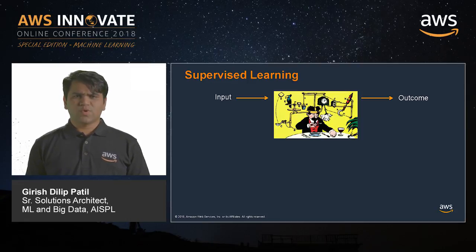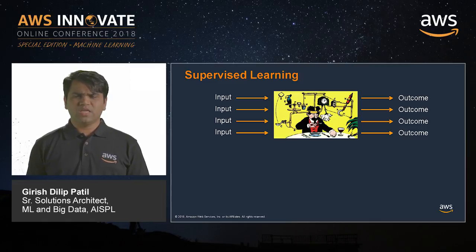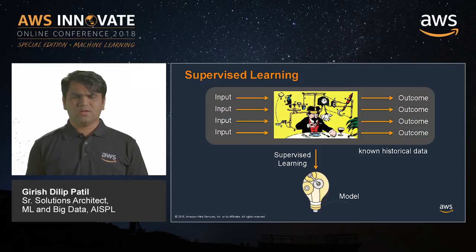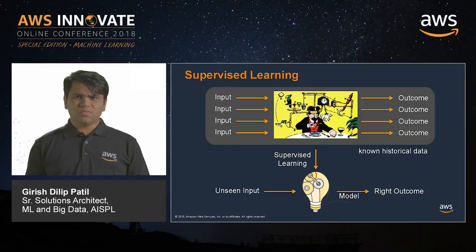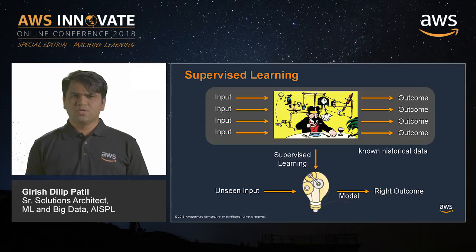Here is how a supervised algorithm works. You supply a lot of inputs to the algorithm and you also tell it what the right kind of outputs are. The outputs could be various values you are trying to predict, or it could be a yes/no type of variable, or it could be a category. You provide lots of past inputs and known outcomes, and the algorithm builds a model that can predict unseen inputs.